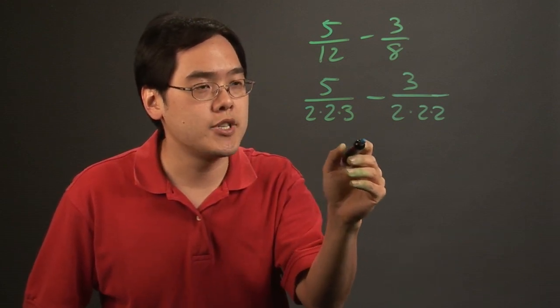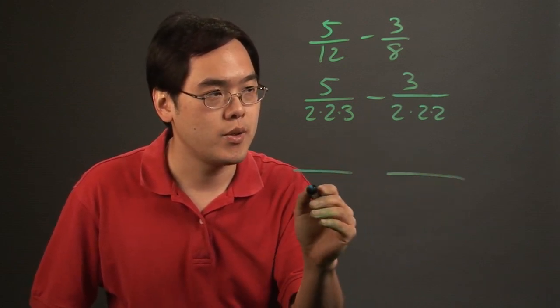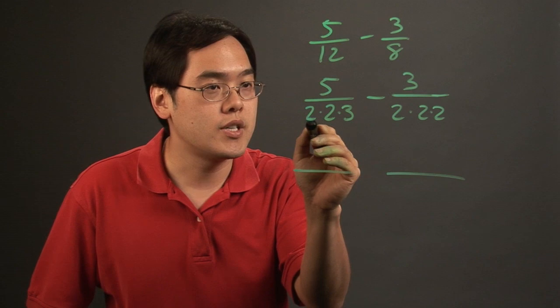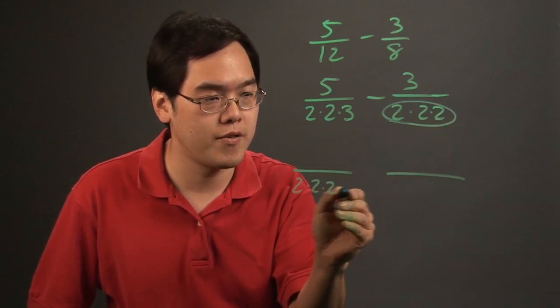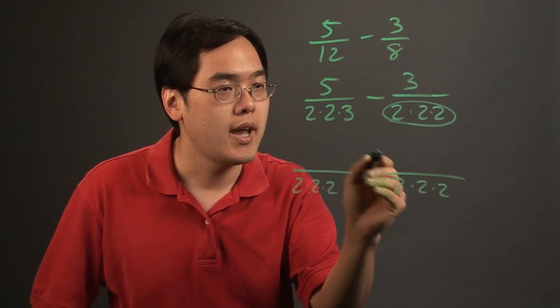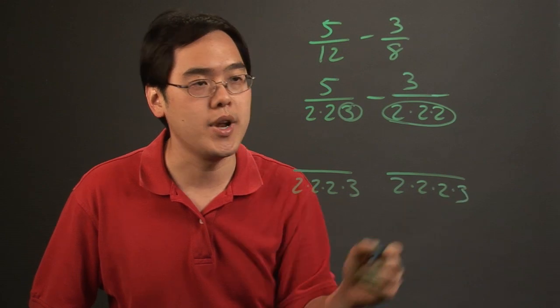The least common denominator is going to be using the factorization for both fractions. This has two twos, this is three twos, so we're going to take these three twos. And then this has a three, so the least common denominator is going to have a three.